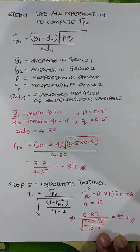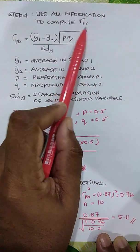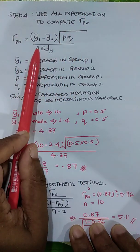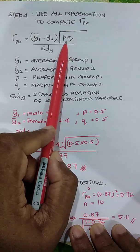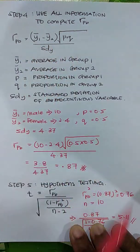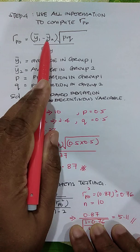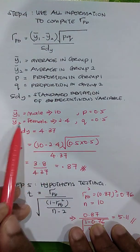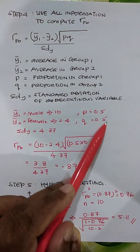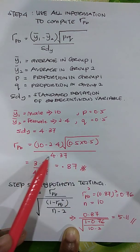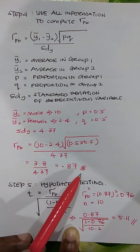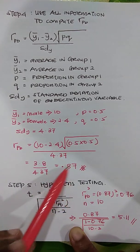Once you have the means, proportions, and standard deviation, you can compute the point-biserial correlation coefficient. The formula is: mean1 minus mean2, multiplied by the square root of p times q, all divided by the standard deviation of Y. Substituting the values — mean of male is 10, mean of female is 2.4, standard deviation is 4.37, p is 0.5, and q is 0.5 — you get a point-biserial correlation coefficient of 0.87.